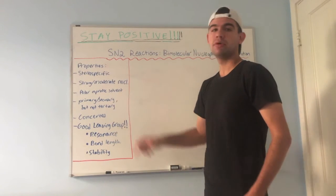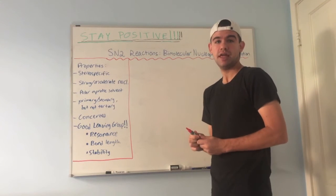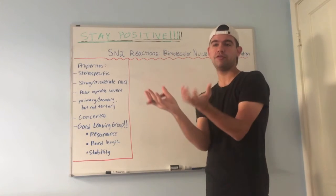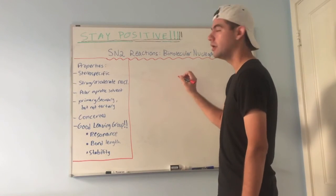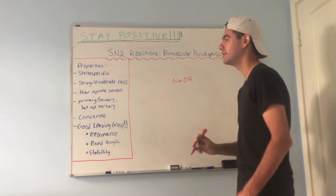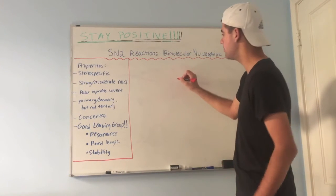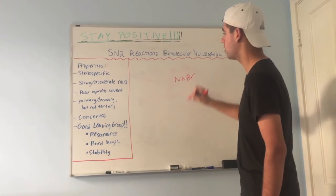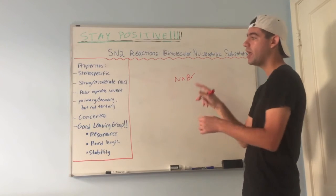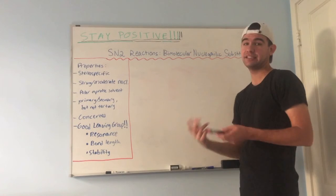You also want a polar aprotic solvent for SN2 reactions. That's because the nucleophile is stabilized in polar aprotic solvents. Polar protic solvents can form a hydration shell around a nucleophile — for example, if you put NaBr in a polar protic solvent, the H2O or methanol molecules surround it and hinder its nucleophilicity. So you want a polar aprotic solvent, like acetone.